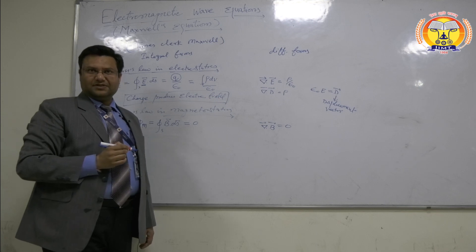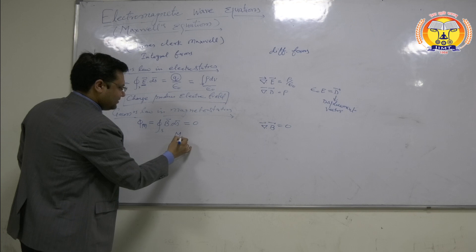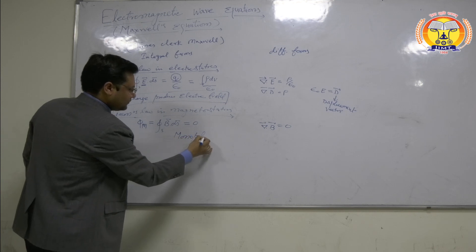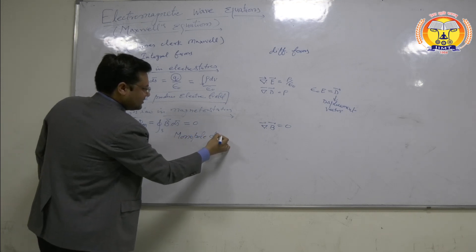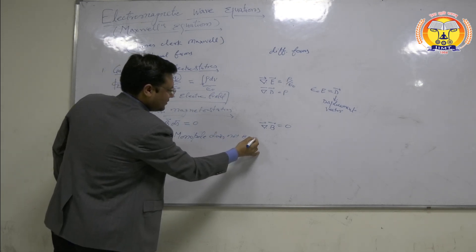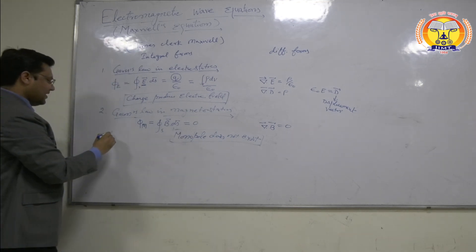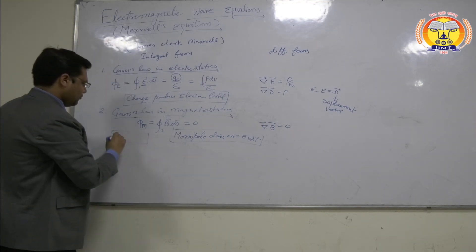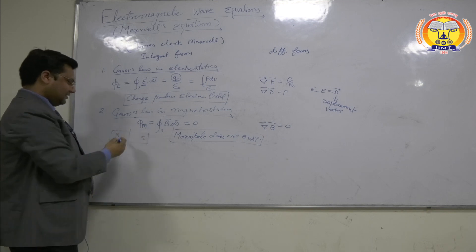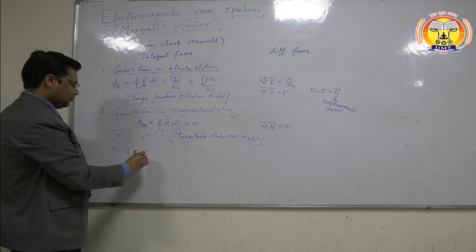This equation tells us that magnetic monopoles do not exist. Every magnet has two poles — a north pole and a south pole. If we break a magnet, it again converts into a north pole and a south pole. Monopoles do not exist.